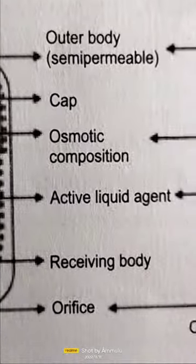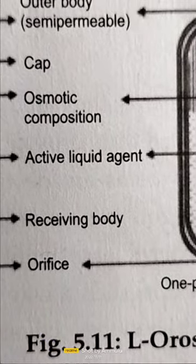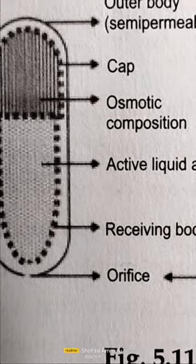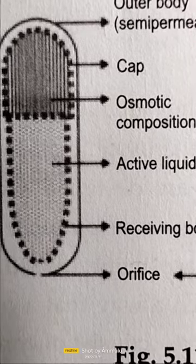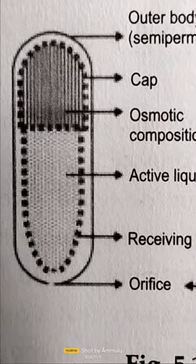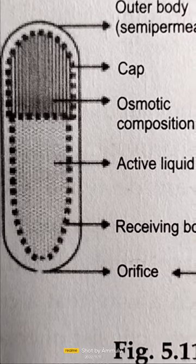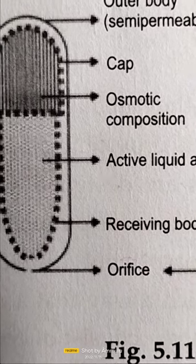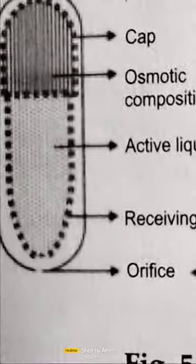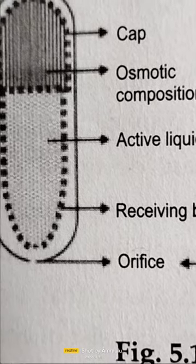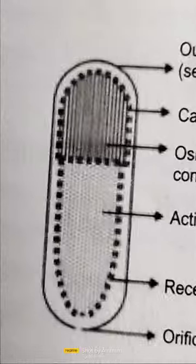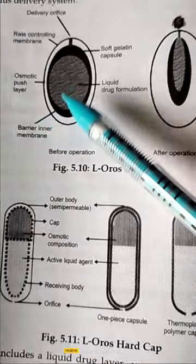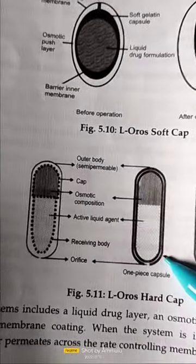Another type is the liquid oral osmotic system, designed to deliver drugs in liquid formulations. Most liquid formulations are delivered into the body through implants using this system. These are available in three types: liquid oral osmotic system capsules, available in hard capsule forms and soft capsule forms.